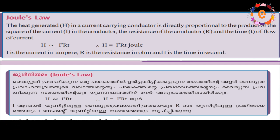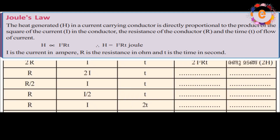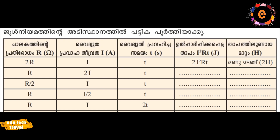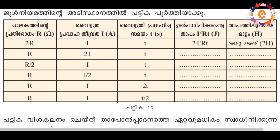The heat generated is directly proportional to the product of the square of the current, the resistance of the conductor, and the time of flow of current. H is proportional to I²Rt, or H is equal to I²Rt.